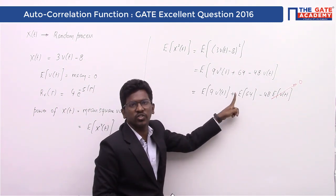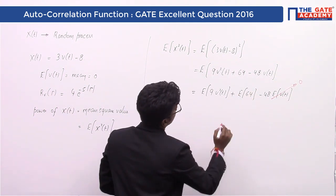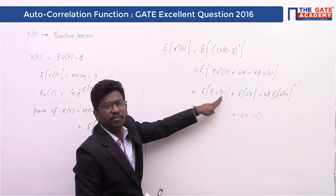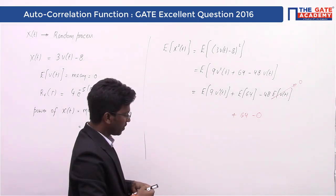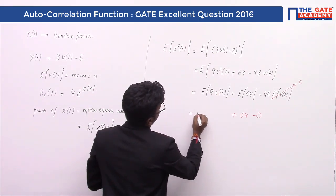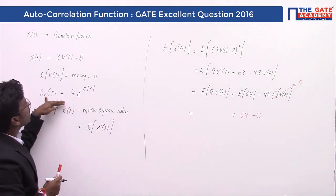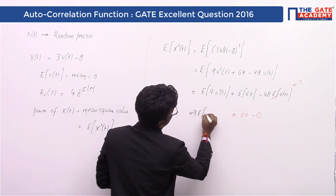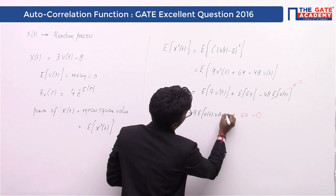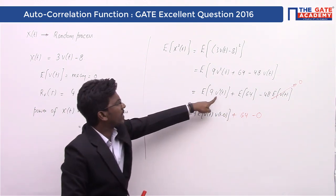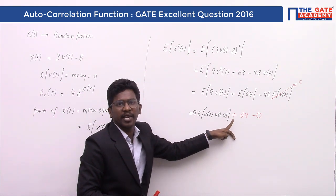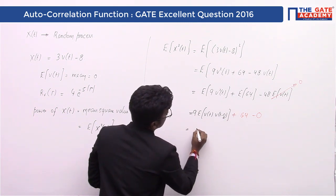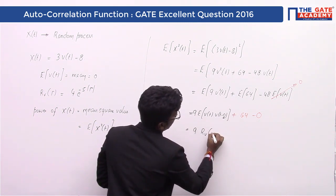The expectation of a constant is the constant itself, so E[64] = 64. Now we have 9·E[v²(t)] + 64. For E[v²(t)], I don't directly know the power of v(t), but I know the autocorrelation function. I can write E[v²(t)] = E[v(t)·v(t-0)], which is relating the process at a time shift of zero — that is nothing but the autocorrelation function Rv(τ) evaluated at τ = 0.